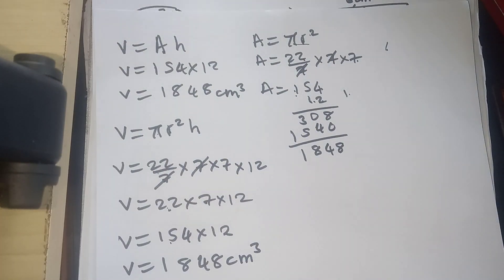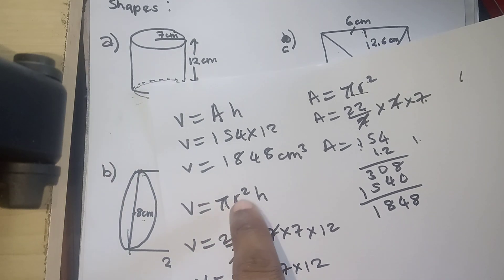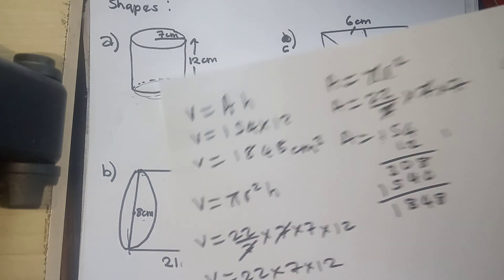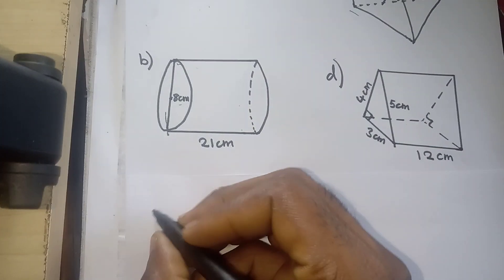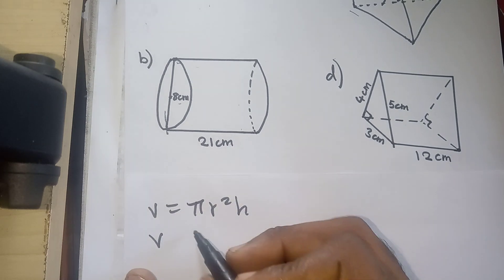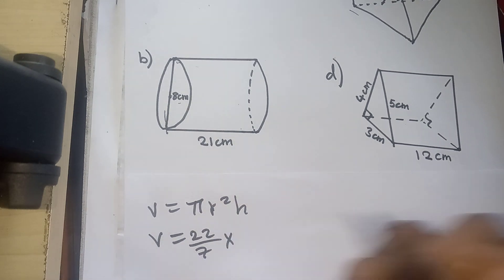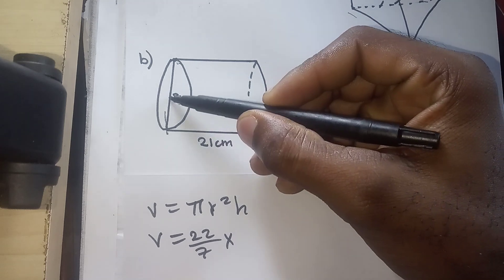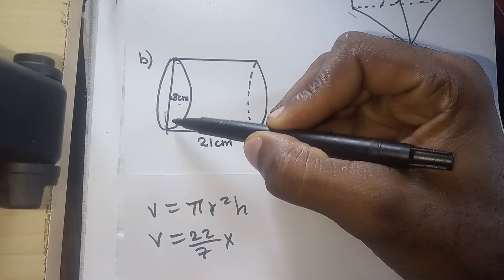The answer is in cubic centimeters because volume deals with three dimensions — length, breadth, and height. In the case of a cylinder, you have r squared giving two dimensions, and h giving the third. Now for part B, we use the same formula: V equals pi r squared h. Pi is 22 over 7, multiplied by the radius. Remember, the radius is the distance from the center to any point on the circumference.